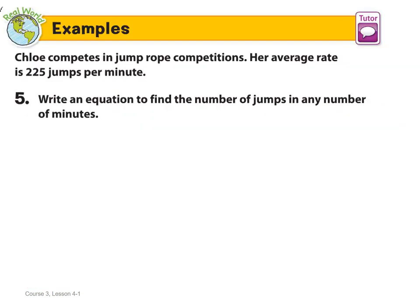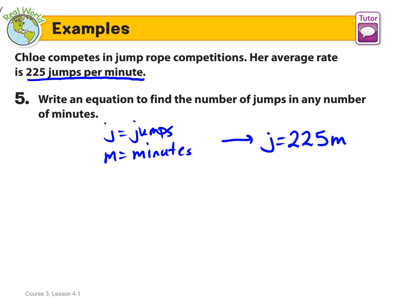Our next example, example number 5. Another real world example: Chloe competes in jump rope competitions. Her average rate is 225 jumps per minute. They want us to write an equation to find the number of jumps, so J equals jumps, for any number of minutes, M is minutes. We can take that information and we know that the average rate is 225 jumps per minute. So we can write J equals 225 times M. Every minute, she is jumping 225 times, so that equation represents that situation.